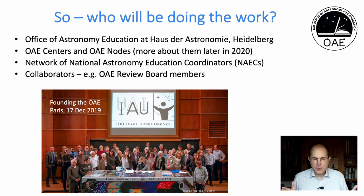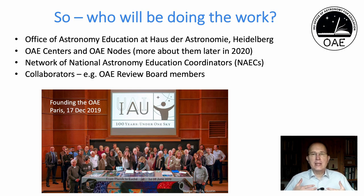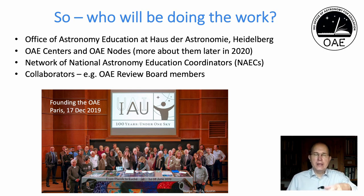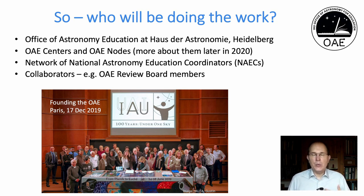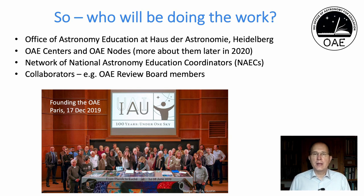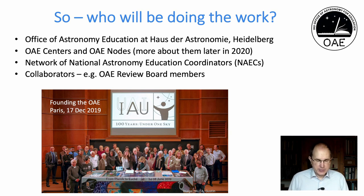Who will be doing the work? The Office of Astronomy for Education is at Haus der Astronomie in Heidelberg. We are getting additional institutions on board as OAE centers and OAE nodes — offices in different locations around the world that are part of the Office of Astronomy for Education and support its mission with personnel and funding. We are currently establishing the first OAE centers and nodes, and you will hear more about them later in 2020. There is also the Network of National Astronomy Education Coordinators, and collaborators contributing to OAE reviews and other subjects.